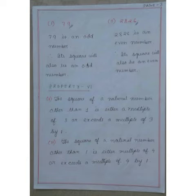How to check if a given number is even or odd? If the last digit of the given number is divisible by 2, then the number is even. If it is not exactly divisible by 2, then it is an odd number. 79 is an odd number, so according to property 5, the square of 79 will be an odd number. Number 2, 2826 is an even number, so its square will also be an even number.